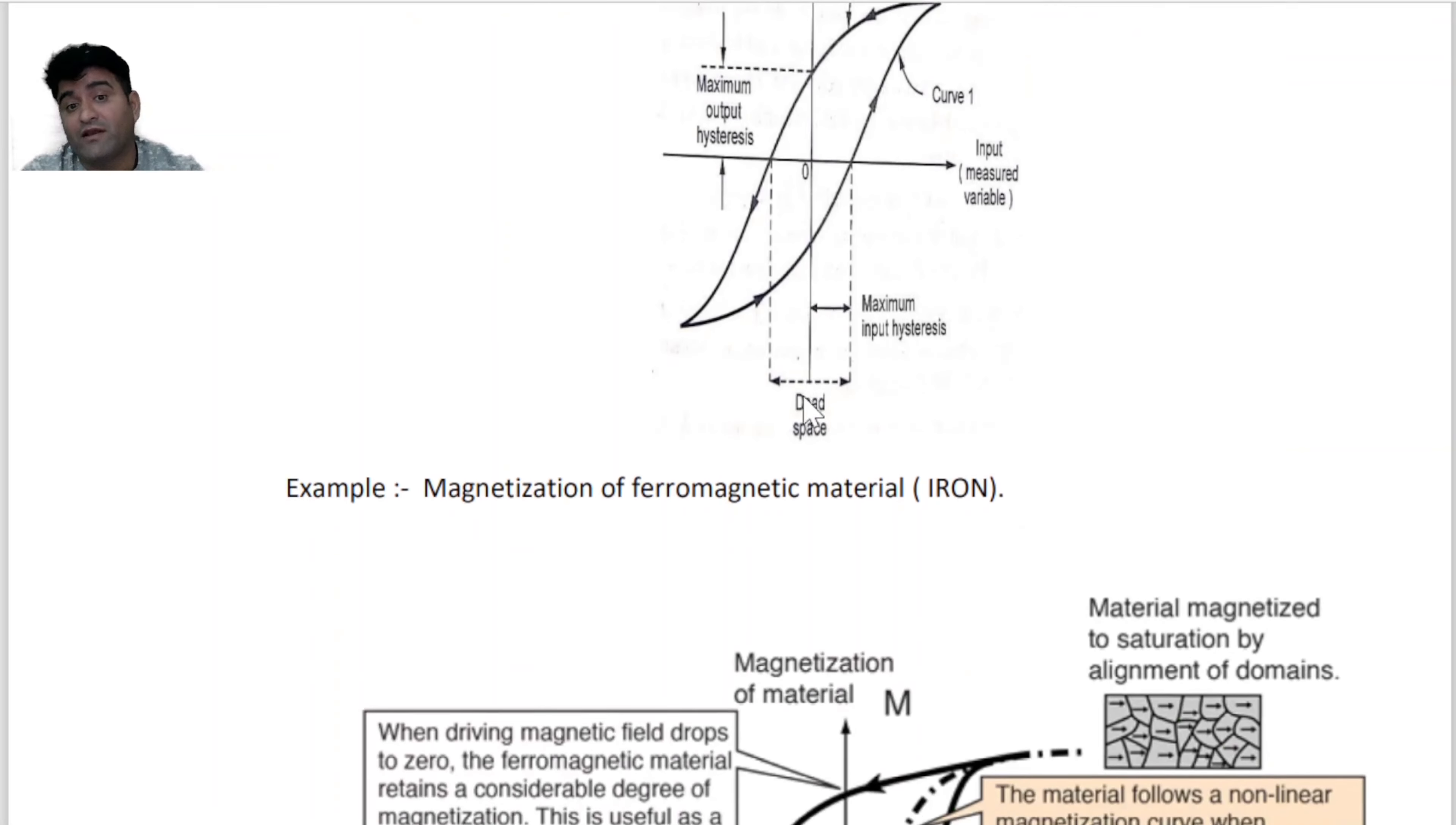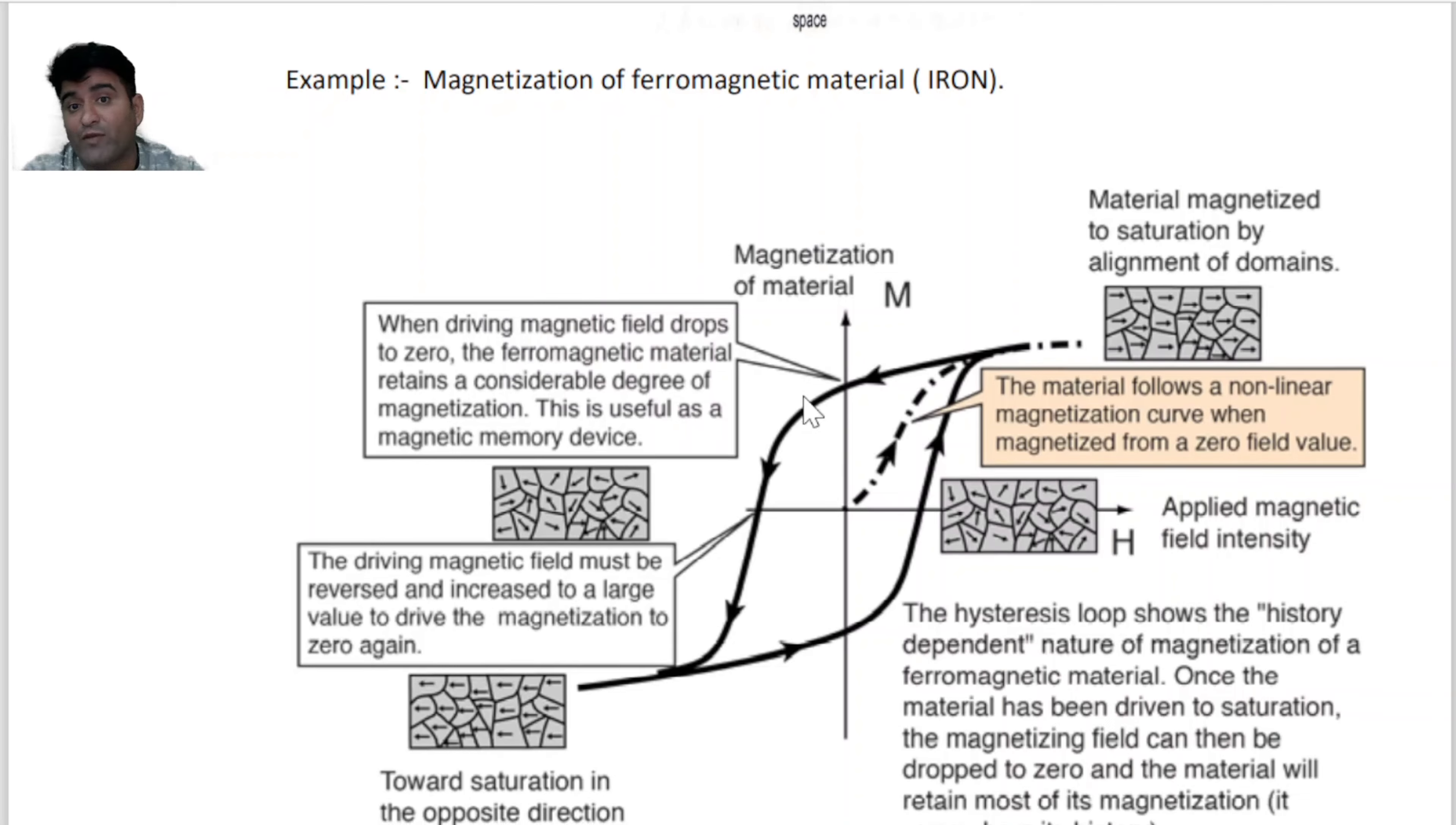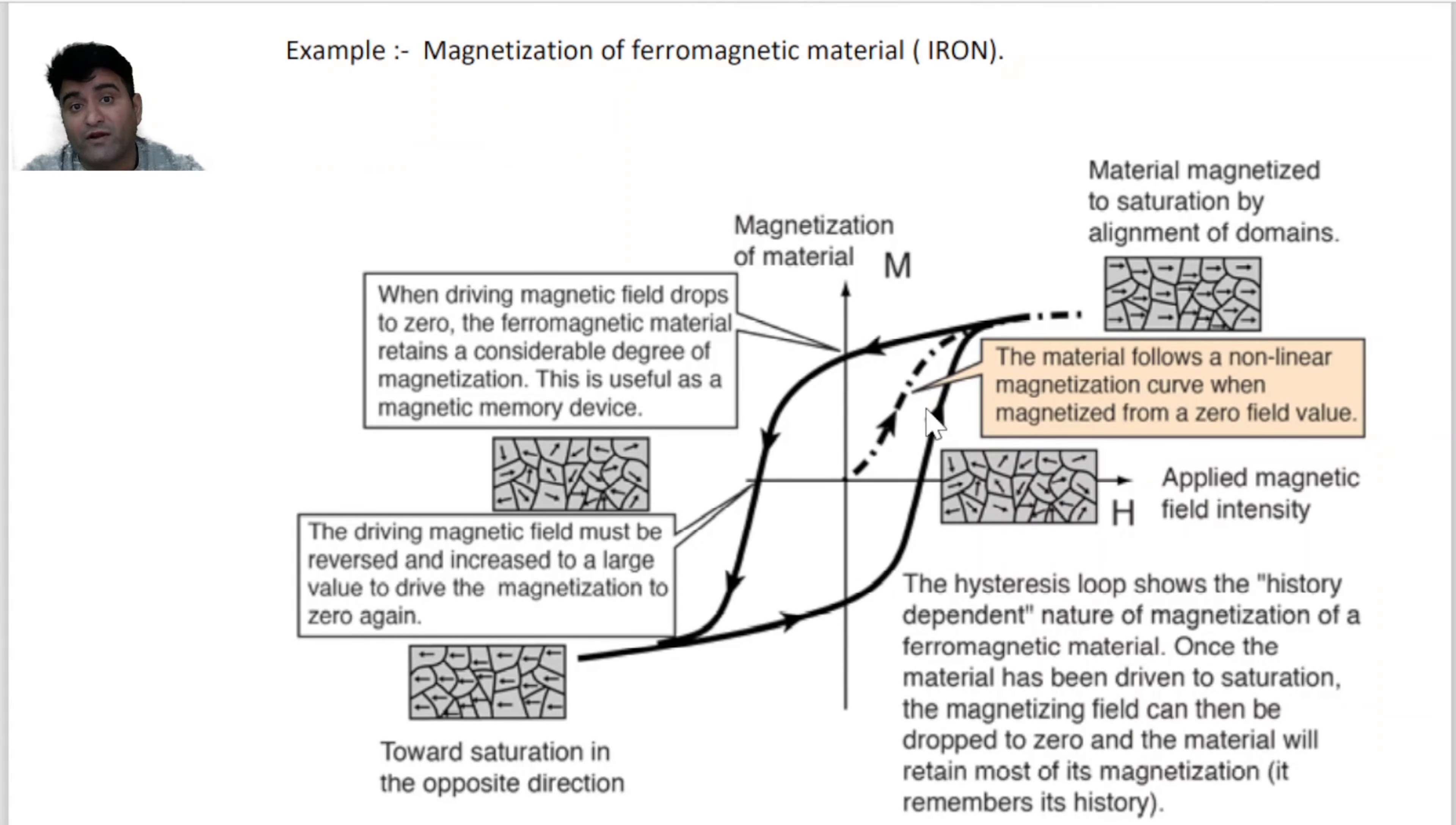Ab ek example ke through samajhne ki koshish karte hai. Hamare paas ek ferromagnetic material hai jaise iron. Ferromagnetic material me permanent magnetic dipole moment hote hai. Hum usse ek external magnetic field me rakhenge ya uspe magnetic field apply karenge for magnetization.